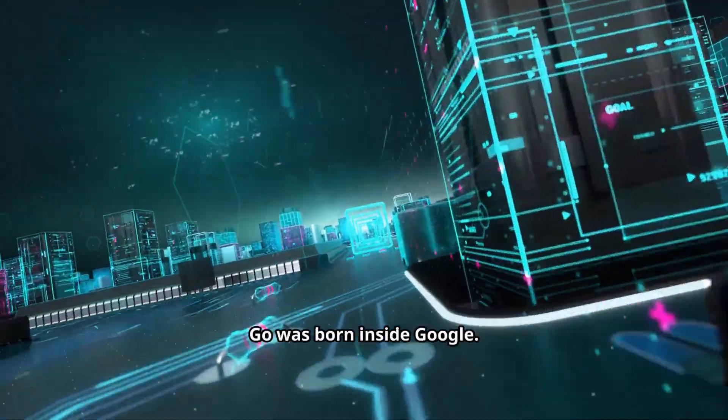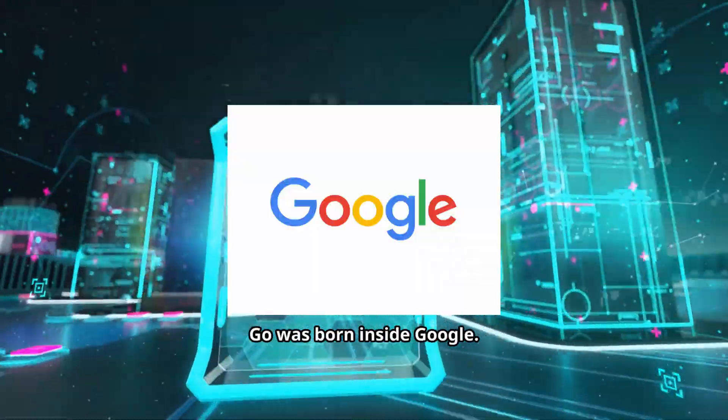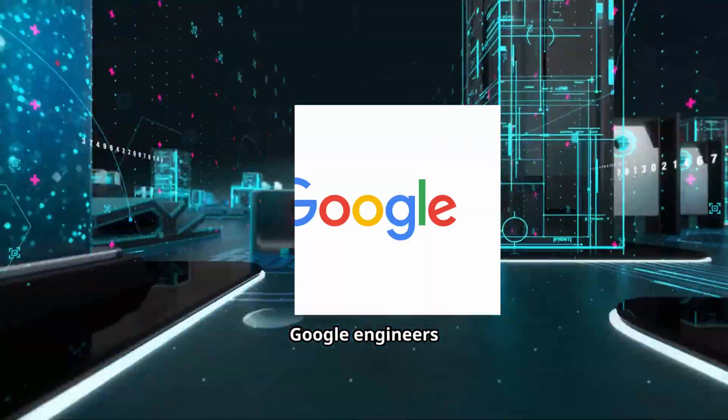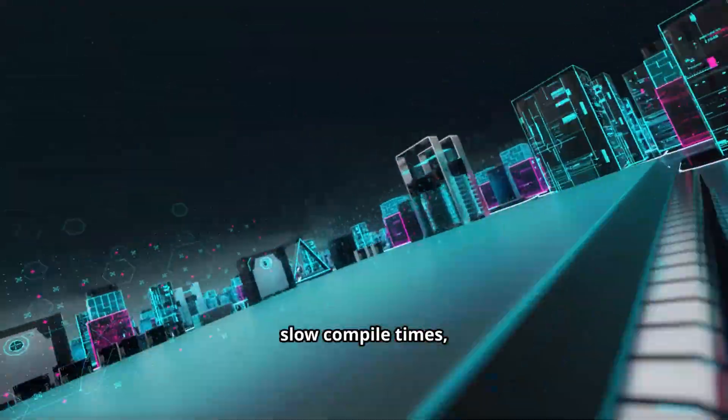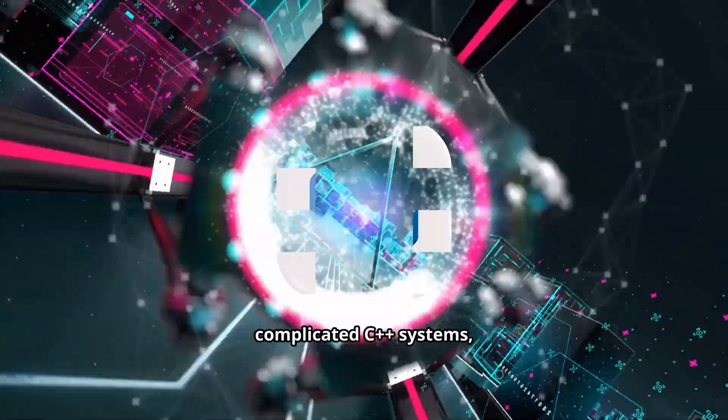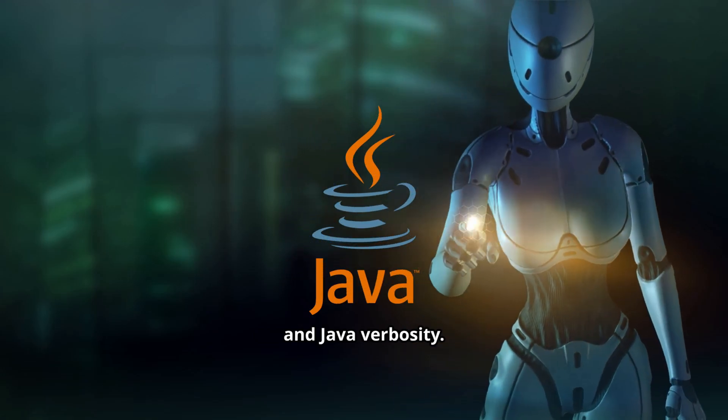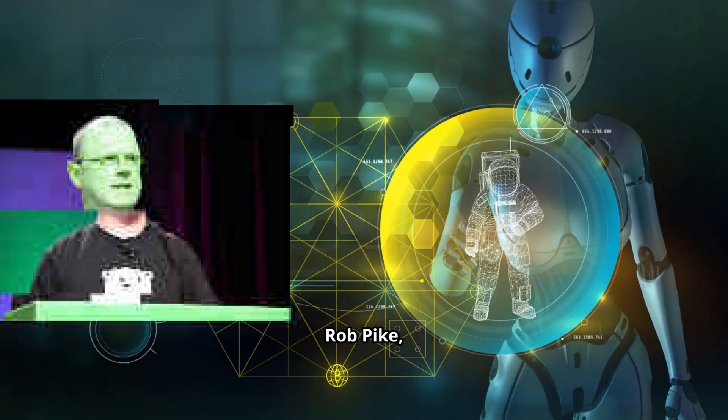Let's rewind. Go was born inside Google. The challenge? Google engineers were drowning in slow compile times, complicated C++ systems, and Java verbosity. Rob Pike, Ken Thompson, and Robert Griesemer, legends in computing, set out to build something different.